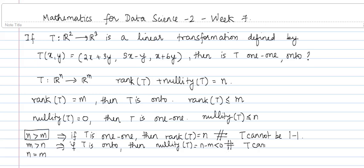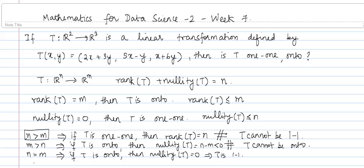So T cannot be onto. When m, the dimension of the codomain, is strictly greater than the dimension of the domain, the linear transformation cannot be onto. When n is equal to m, if T is onto, then the rank of T has to be equal to m, but that is also equal to n. This forces nullity of T to be 0, which means that T is 1-to-1. So when the dimension of the domain and the codomain are the same, if the linear transformation is onto, it has to be 1-to-1. Similarly, if the linear transformation is 1-to-1, it has to be onto.